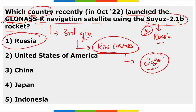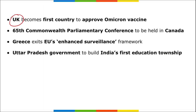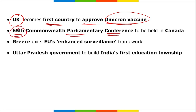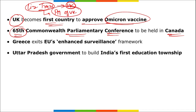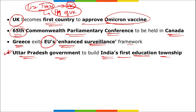The UK became the first country to approve the Omicron vaccination. The 65th Commonwealth Parliamentary Conference is to be held in Canada. UK Prime Minister Liz Truss recently resigned, becoming the shortest-serving Prime Minister of the UK. Greece has exited the European Union's Enhanced Surveillance Framework.